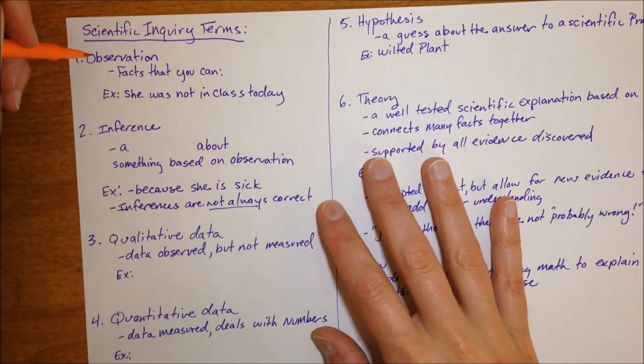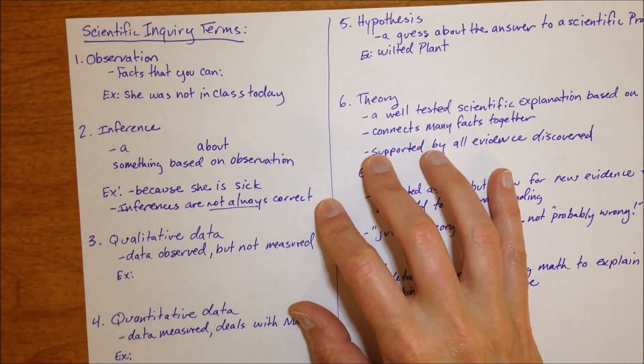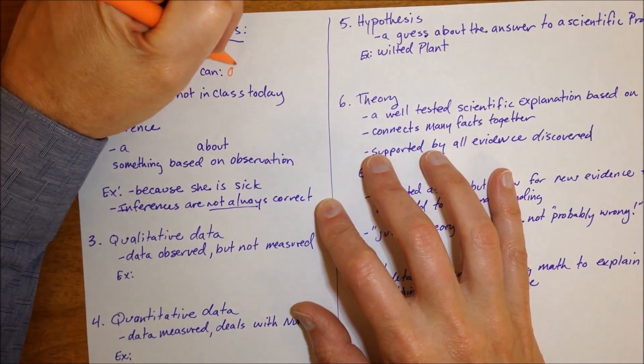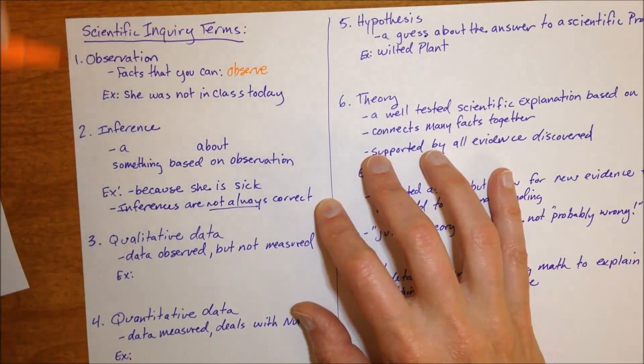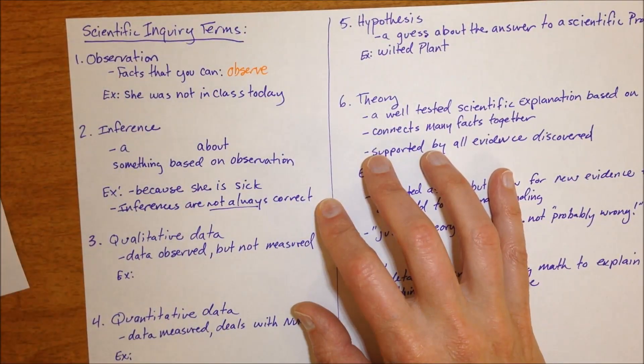So starting with the idea of observation versus inferences. Observations are facts that you can observe with your senses, so you can see, touch, taste, smell. That's what an observation is.